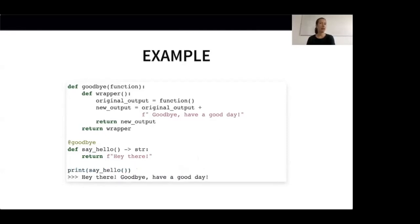The output is hopefully what you expected. When our say_hello function is decorated with the goodbye decorator, its output changes to 'hey there' — which is the original output — and after that 'goodbye, have a good day', which is the output added by the wrapper function.